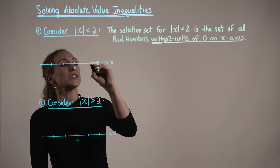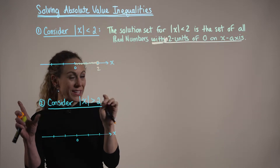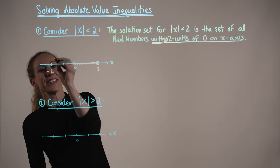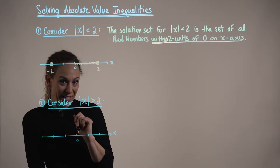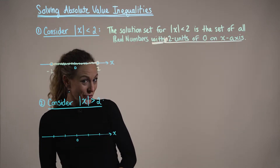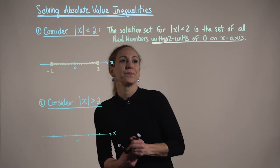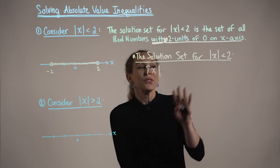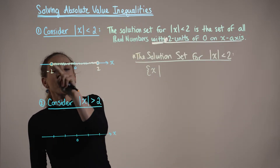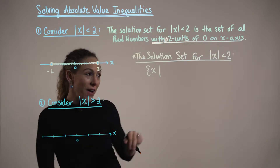So x could be any real number from 0 to positive 2. But don't forget, negative 2 is also 2 units away from 0 on the x-axis. So we draw an open circle at negative 2, and x could be any real number strictly greater than negative 2. The solution set for the absolute value of x being strictly less than 2 is all real numbers strictly greater than negative 2 but strictly less than positive 2.